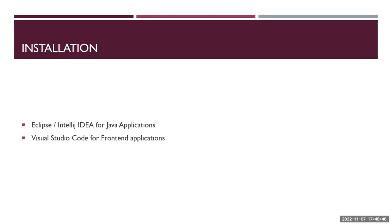Whenever you onboard to a project, the client will ask you to review the source code. All the source code is uploaded to a repository — it can be GitHub, Bitbucket, or other tools. You need to clone the source code, meaning you pull it from the cloud to your local machine, and then import it into your IDE. That IDE can be Eclipse or IntelliJ.